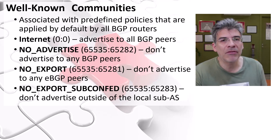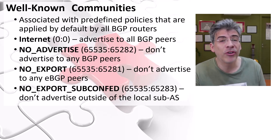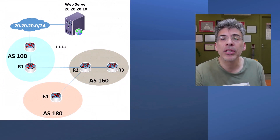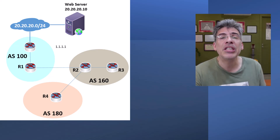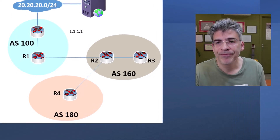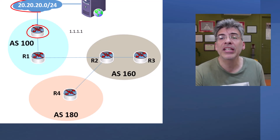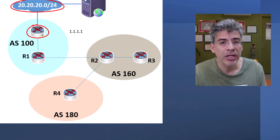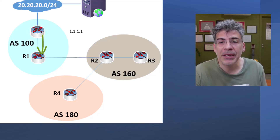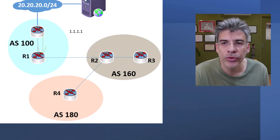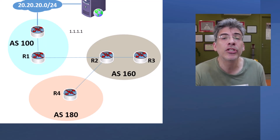Up to this point this might sound very theoretical, so let's take a look at a couple of the well-known communities and see how they affect the way BGP routers share routes. Take a look at this topology. This router is advertising the 20.20.20.0/24 network into AS100 using BGP. Via iBGP, R1 learns of this route. R1 is configured to add the no-advertise community to this route before it sends the BGP update to R2.